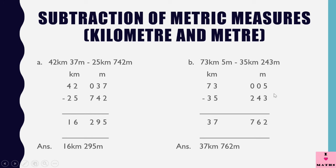Same way here. 5 minus 3 is 2. 10 minus 4 is 6. 9 minus 2 is 7. 12 minus 5 is 7. And 6 minus 3 is 3. So the answer is 37 kilometers 762 meters.